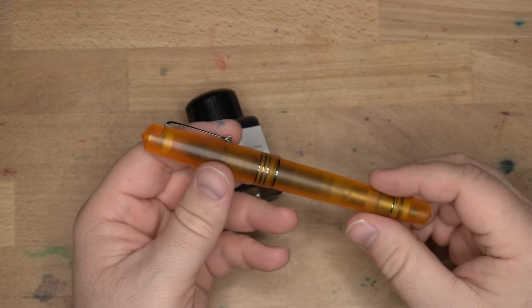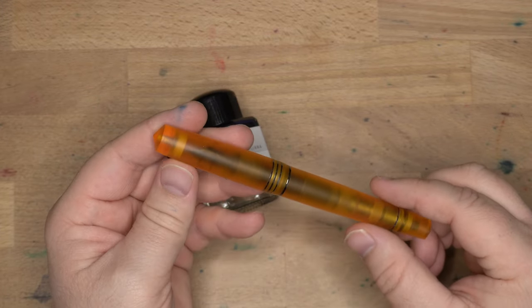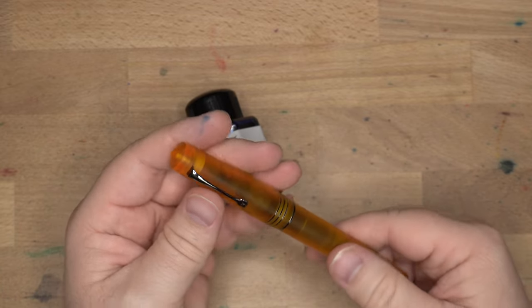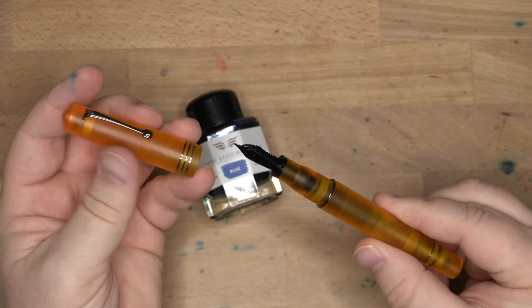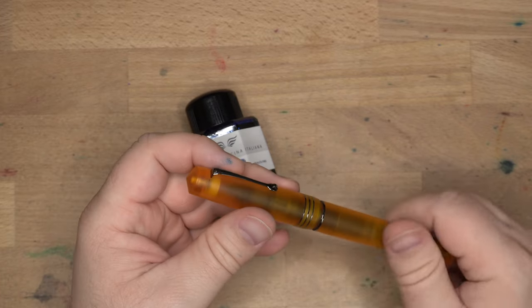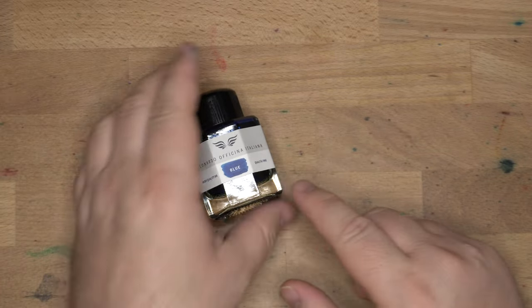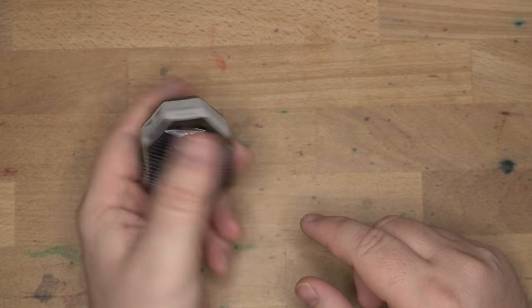This ink actually came in the box with this pen, which is a Leonardo Memento Zero Grande Pura. This is the orange Pura. It is a beautiful pen. It actually doesn't have this ink in it at the moment, so we're just going to set this aside.